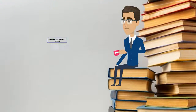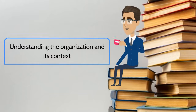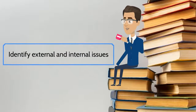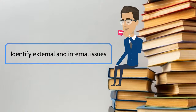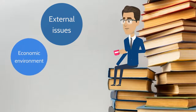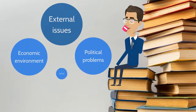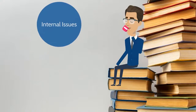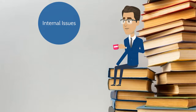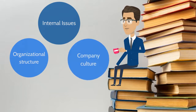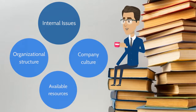For understanding the organization and its context, the company should identify external and internal issues to achieve the objectives of QMS. For example, an external issue could be the economic environment, political problems, culture, and so on, while an internal issue could relate to organization structure, company culture, available resources, and so on.